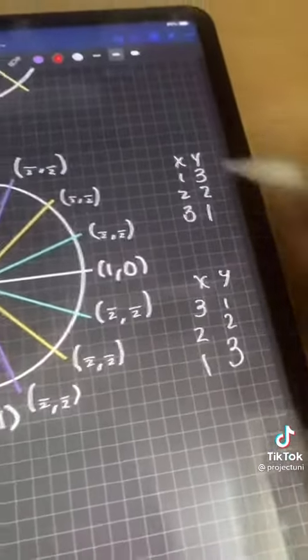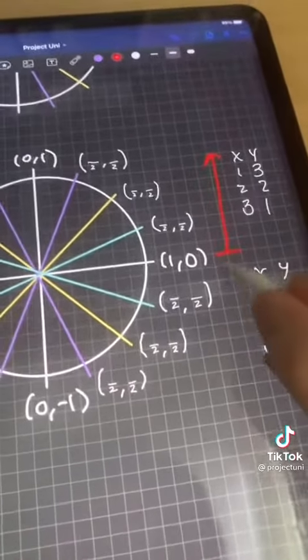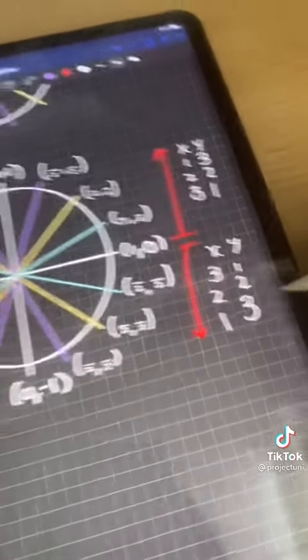What you're going to want to remember is that for the upper half, x is 1, 2, 3, and y is 3, 2, 1. And for the lower half, x is 3, 2, 1, and y is 1, 2, 3.